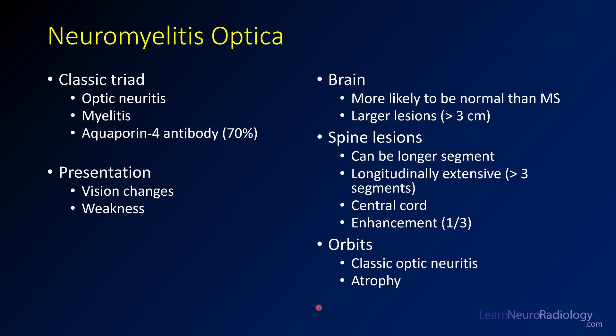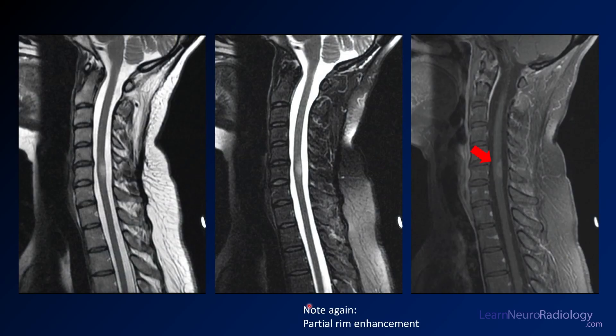This is a case of neuromyelitis optica — NMO. This is typically a triad of optic neuritis and myelitis. Aquaporin-4 antibody is present about 70% of the time. The common presentation is myelopathy, weakness, and visual changes. For the brain, it's much more likely to be normal than in MS. Lesions tend to be larger. Spine lesions tend to be longer segment, involving more than three vertebral bodies — what we call longitudinally extensive — and tend to involve the central core. About one in three will enhance, and you may see optic nerve atrophy.